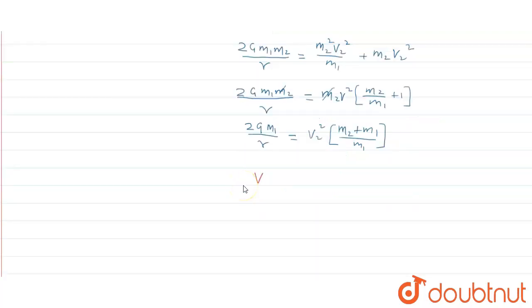We get v2 to be equal to m1 under root 2G upon r times m1 plus m2. And in the same way, we will get v1 is equal to m2 under root 2G upon r times m1 plus m2.